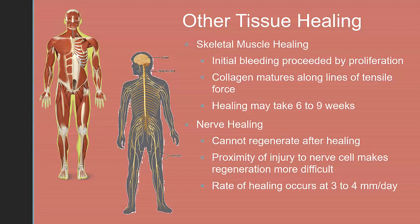Other tissue healing — skeletal muscle healing. The initial bleeding is followed by the proliferation of ground substances and fibroblasts. Collagen matures along the lines of tensile forces, and healing can take anywhere from 6–9 weeks. Nerve healing: nerves cannot regenerate after injury, though regeneration may take place within a nerve fiber. The proximity of the injury to the nerve cell makes regeneration more difficult. For nerve cell regeneration, an optimal environment is necessary. The rate of healing occurs at 3–4 millimeters per day. An injured central nervous system nerve does not heal as quickly as the peripheral nerves do.